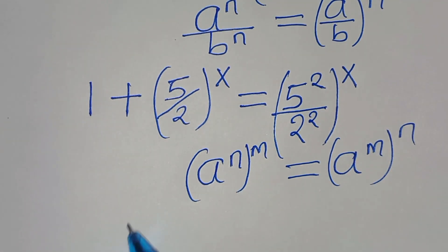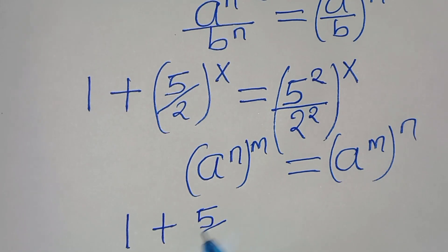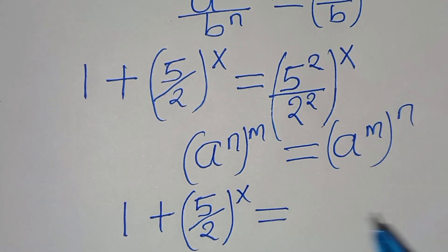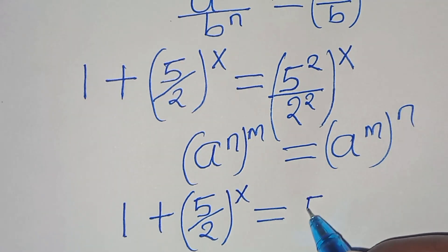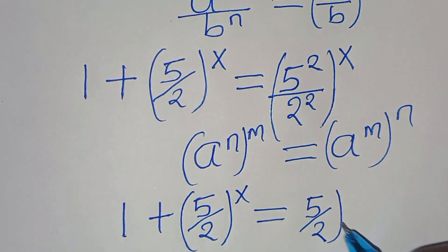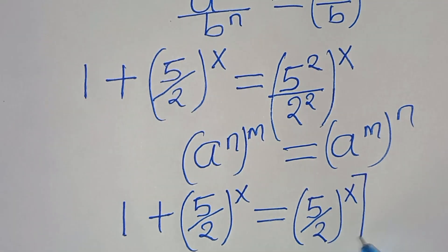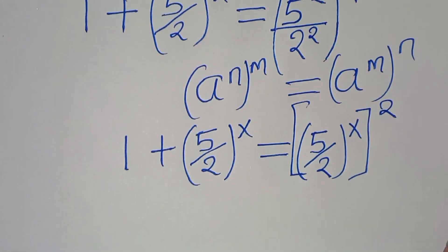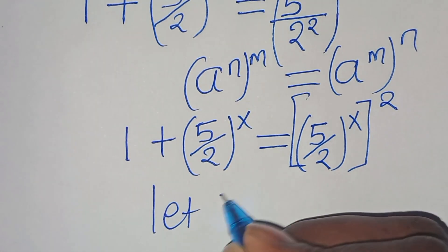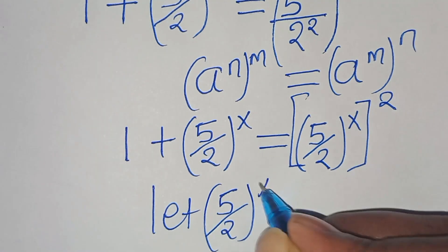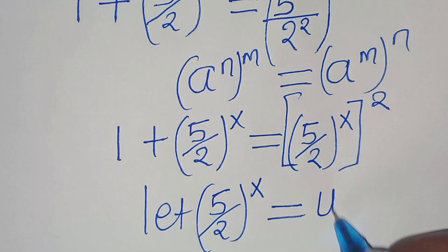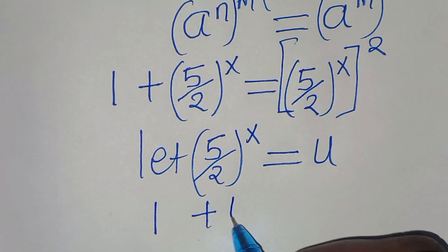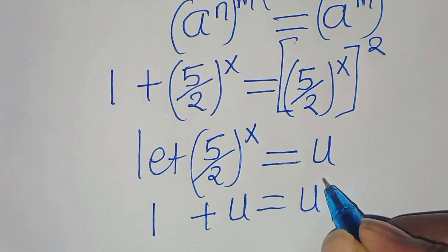We have 1 plus (5/2) raised to the power of x, equal to (5/2) raised to the power of x, everything raised to the power of 2. We can let (5/2) raised to the power of x equal to u. Substituting u, we have 1 plus u equals u squared.